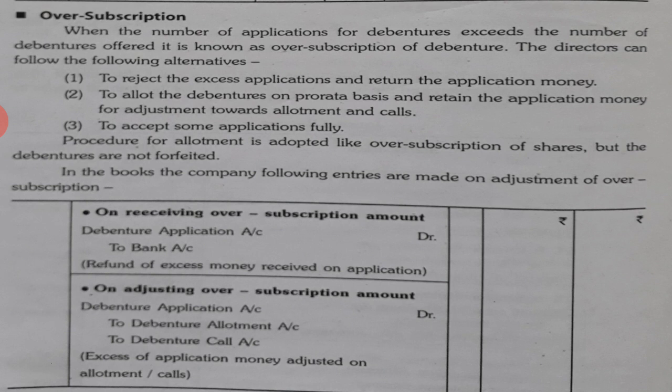When over subscriptions occur, the entries are as follows: Debentures Application Account is debited to Bank Account for the excess amount. When the excess money is returned or refunded, if it is adjusted with the allotment, then Debentures Application Account is debited to Debentures Allotment Account and to Debentures Call Account, so that it will be adjusted afterwards. These two entries are done in this regard.